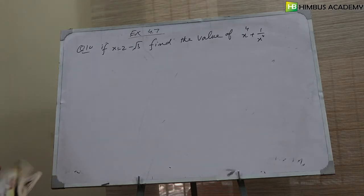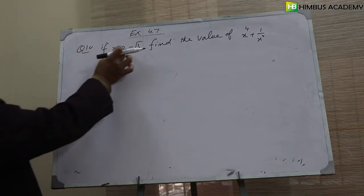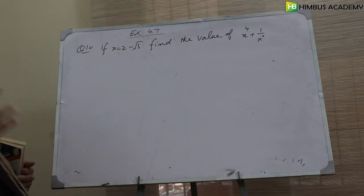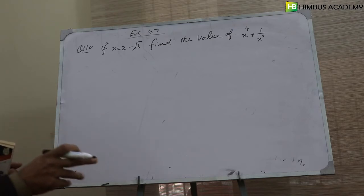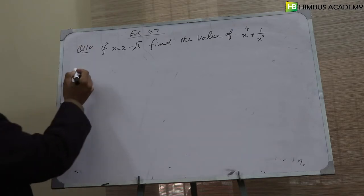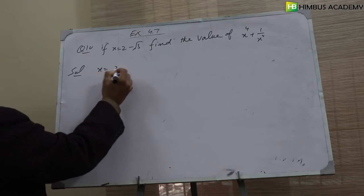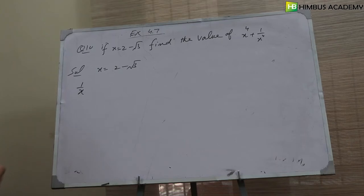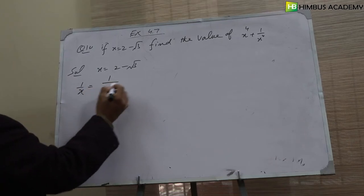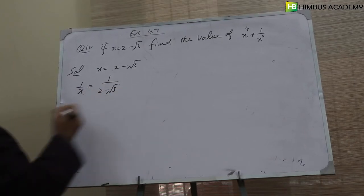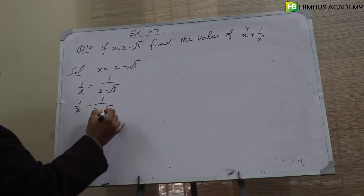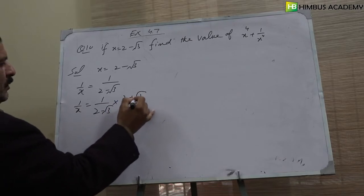x power 4 plus 1 over x power 4 کو ہم directly معلوم نہیں کر سکتے۔ سب سے پہلے 1 over x لگاتے ہیں، پھر ان دونوں کو plus کرتے ہیں، پھر ان کا square لیں گے، پھر اس square کا دوبارہ square لیں گے۔ x is equal to 2 minus square root 3 تو 1 over x کو ہم لکھیں گے 1 over 2 minus square root 3، اور اس کا conjugate کے ساتھ multiply اور divide کریں گے۔